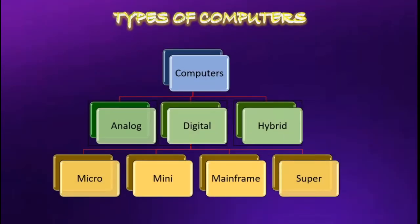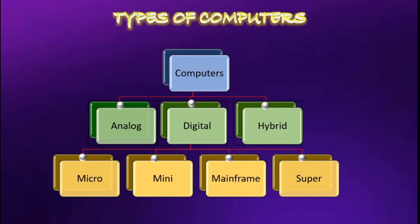Hello children, in this video you will learn about the different types of computers. Computers are basically differentiated into three types based on their operating principles: Analog, Digital, and Hybrid. Digital computers are further classified as Micro, Mini, Mainframe, and Supercomputers.